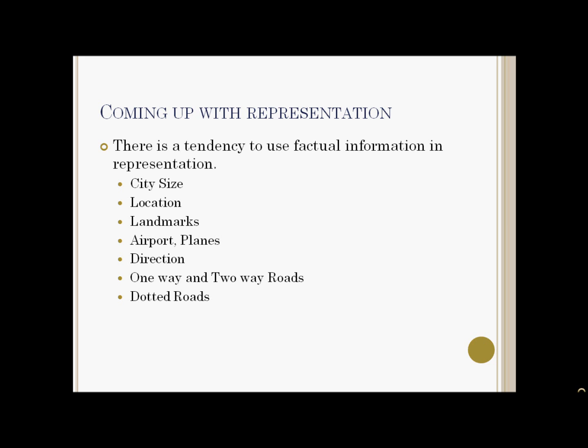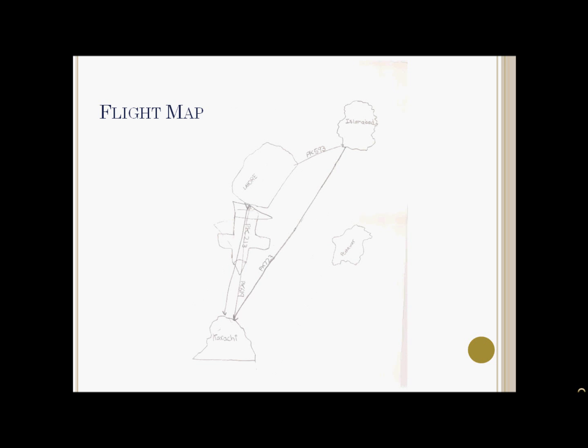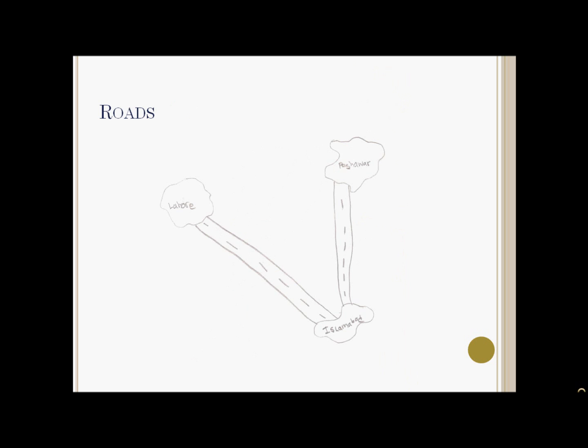For example, when asked to represent roads, some students drew one-way roads while others drew two-way roads. In this figure, Lahore is represented as a city with rivers. This is a flight map drawn by one student, and this is a representation of roads where the roads are represented as two-way roads.